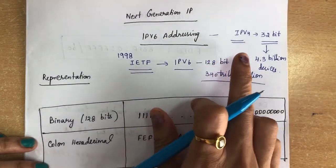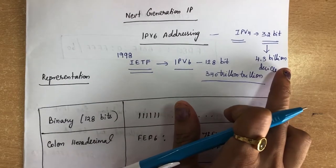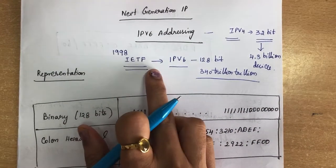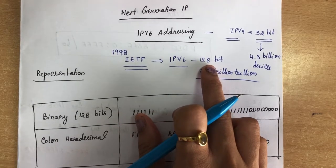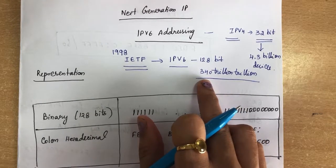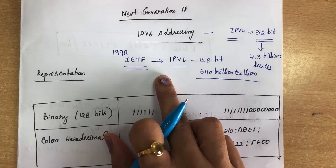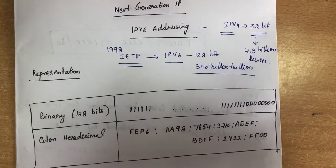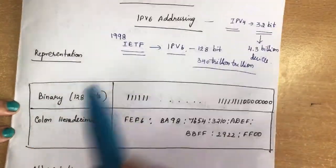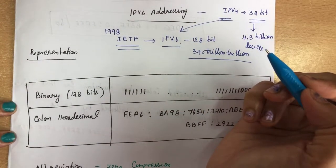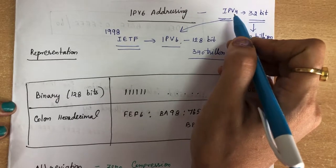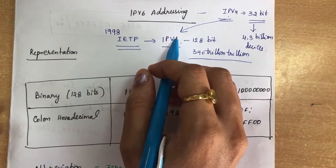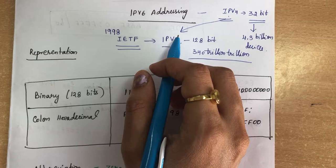IP version 4 has only a 32-bit address and supports only 4.3 billion devices. We needed more addresses due to the growth of the internet, so IETF in 1998 created IP version 6 addressing, which has a 128-bit address and can support 340 trillion trillion devices. IP version 6 solved all the problems of address depletion, and the main reason for migration from IPv4 to IPv6 is the small address space and address depletion in IPv4.